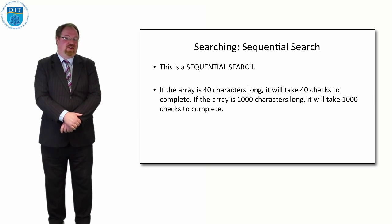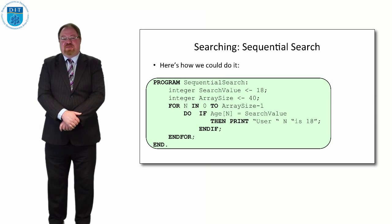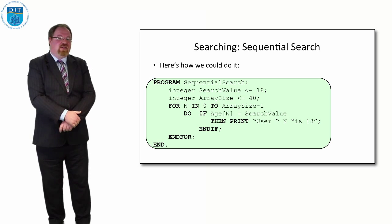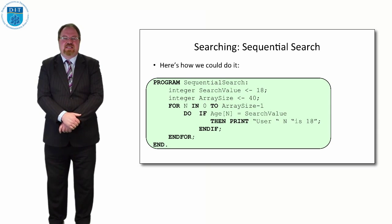So that's a sequential search. It visits every record in the array. A different way of doing that, well, let's look at the code for it first. It's exactly as you'd expect.